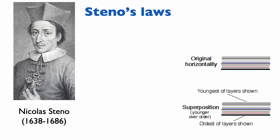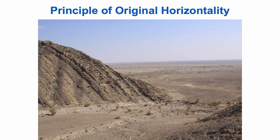Steno's second principle is the principle of original horizontality. He recognized that marine sediments were deposited at a very low angle — maybe one or two degrees, in his mind probably flat. In the field, this is visible in an anticline in Jebel Salak, Oman — a salt core anticline. The principle is that even though these layers are now tilted, the top can still be recognized and we can see they were deposited flat. Tectonics is the main mechanism by which these layers are upturned.